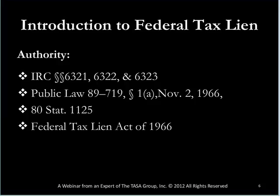The authority for the federal tax lien comes from Congress, who in 1966 enacted the Federal Tax Lien Act, from which were generated the Internal Revenue Code sections. The first three, 6321, 6322, and 6323, are the primary sections. 6324 pertains to estate taxes. 6325 pertains to lien certificates — withdrawal certificates, release certificates, discharge and subordination of the federal tax lien, and so on. The act also contributed to the creation of the public law.